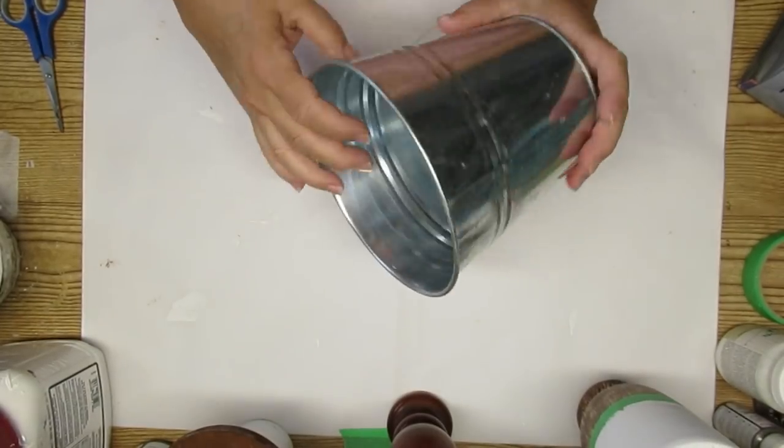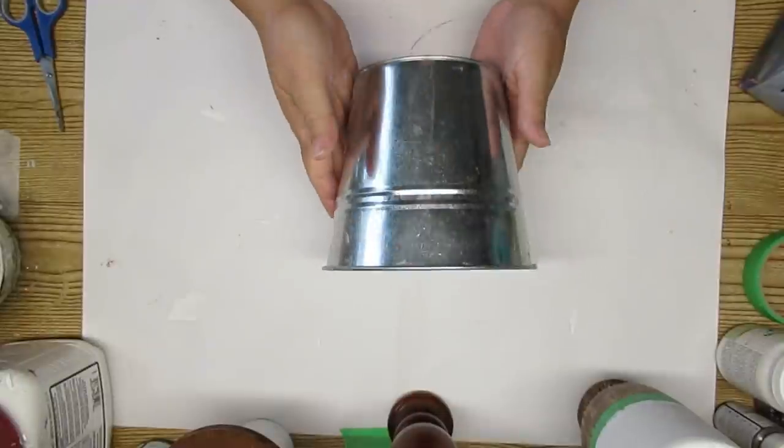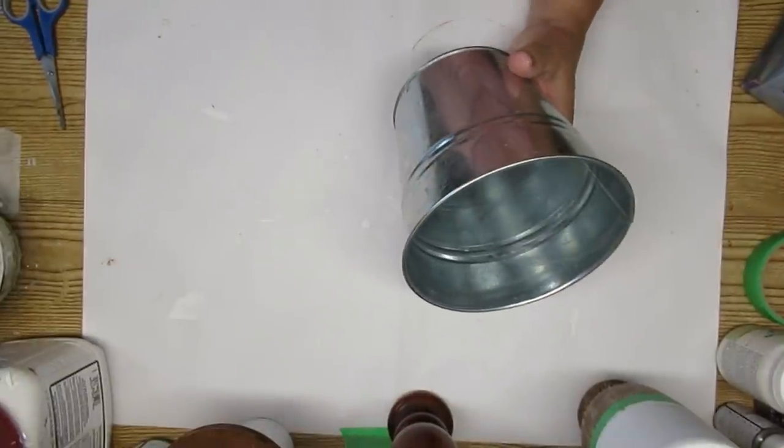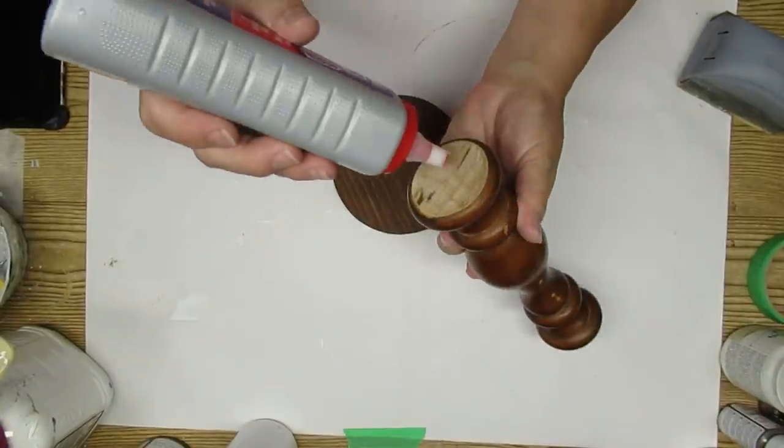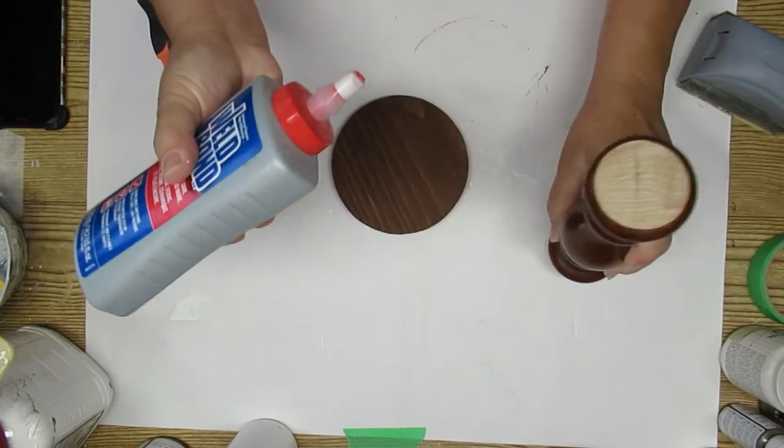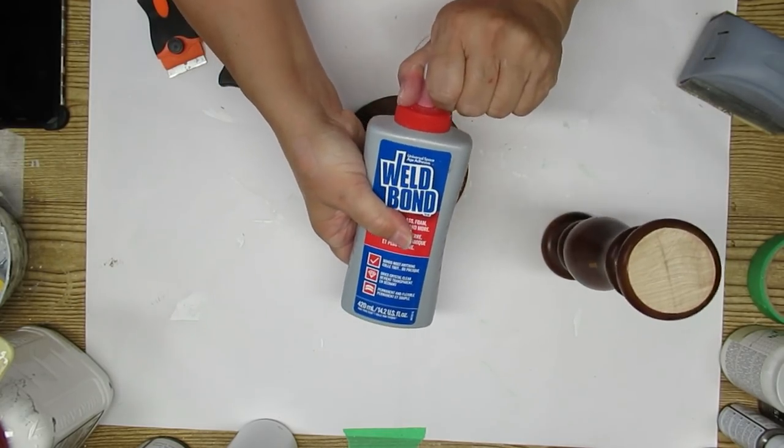While I wait for this stain to fully dry, I'm taking this tin bucket. This is something I've had in my stash for a really long time. I honestly don't even remember where I got it from, but I'm taking it out to my garage and I'm going to give it a couple of coats of flat white spray paint.